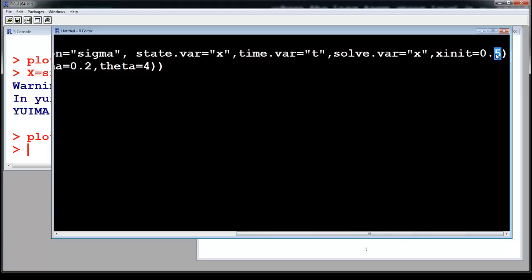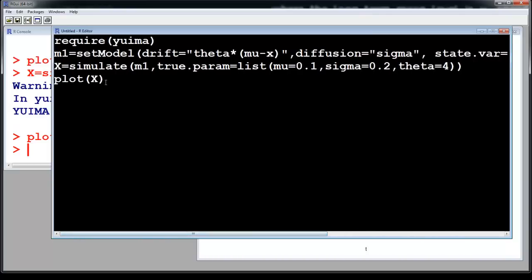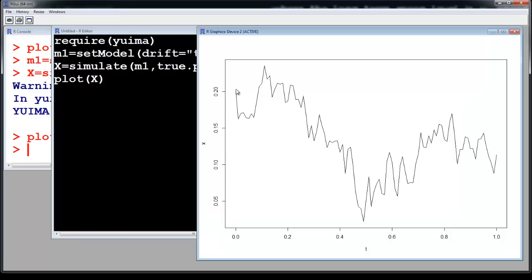So if I take initial value as 0.2, then things will be different. So let us take initial value as 0.2 and run the model. So initial value is 0.2 and my mean was 0.1. So see the process is again different.